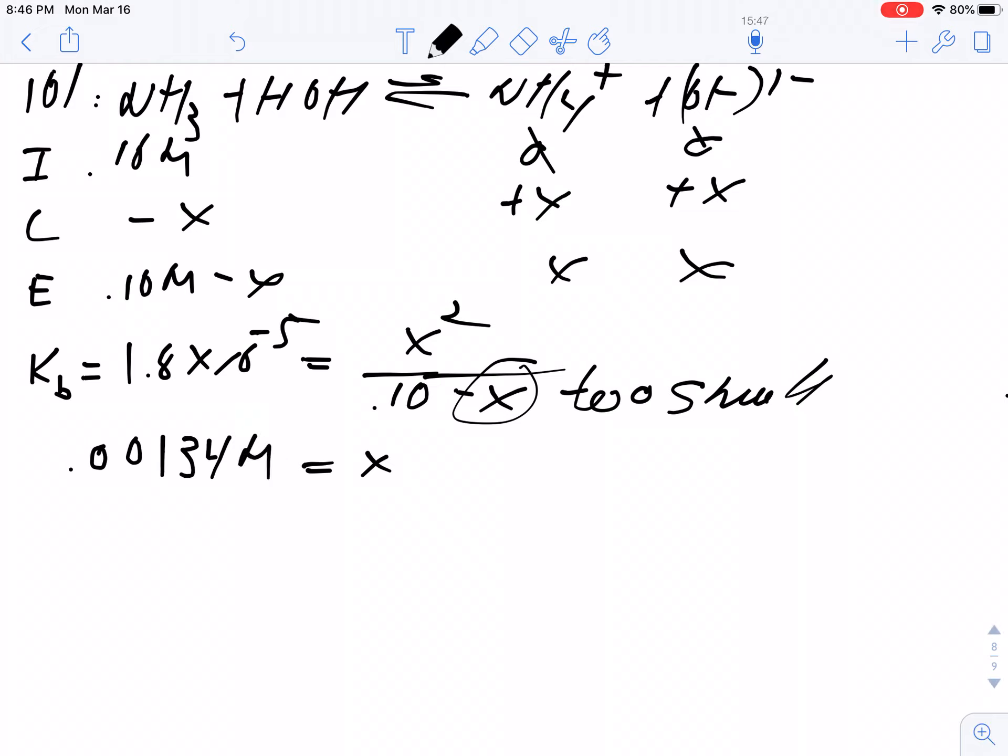If my initial concentration was 0.10 molar and this much of it broke apart, I would divide the two and multiply by 100% to get my percent ionization. So only 1.34% of it breaks apart. Actually, we do have one more problem in our problem set: number 135.